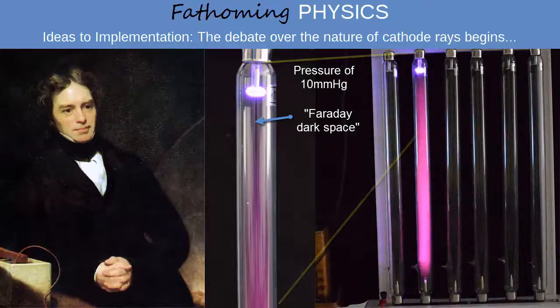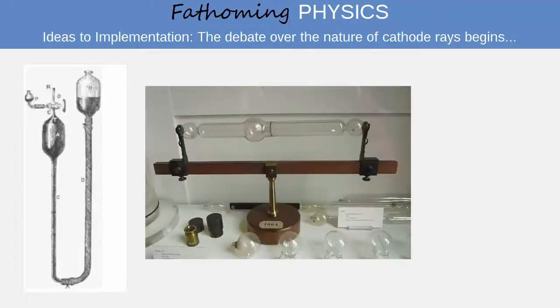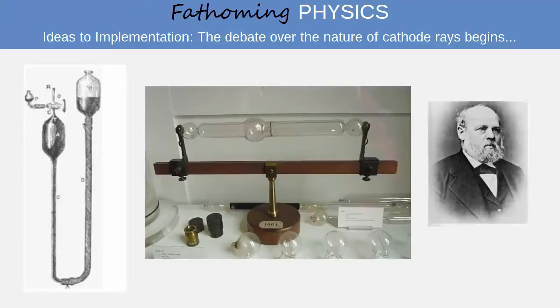For two decades there was little progress until the development in the mid-1850s of a better vacuum pump, and improved techniques for embedding electrodes in glass tubes by Heinrich Geisler, a German inventor and glass blower, which enabled lower vacuum tubes to be obtained.